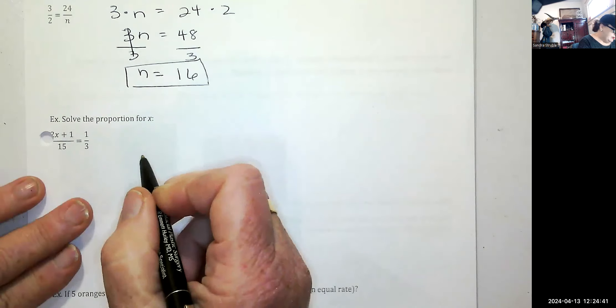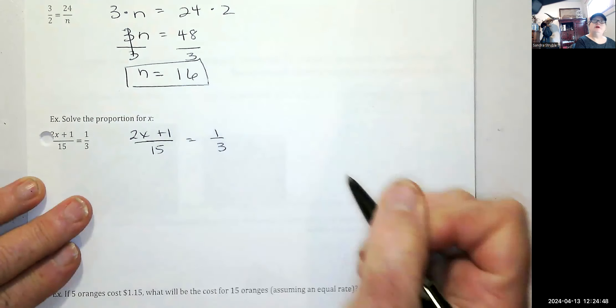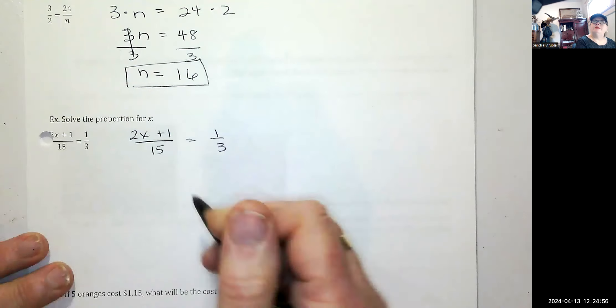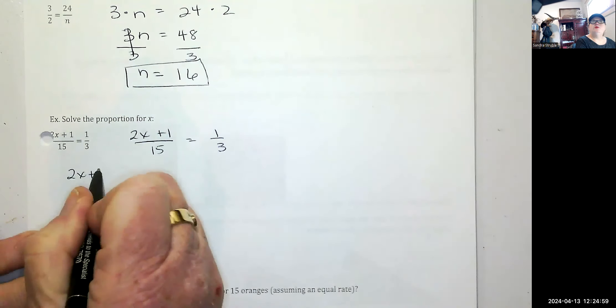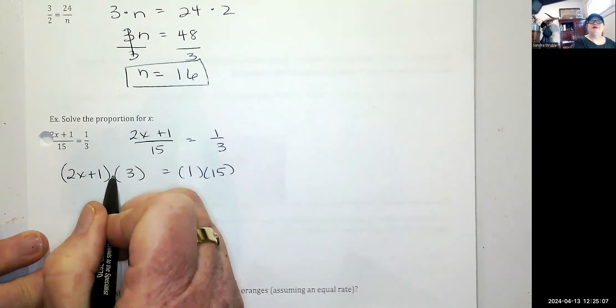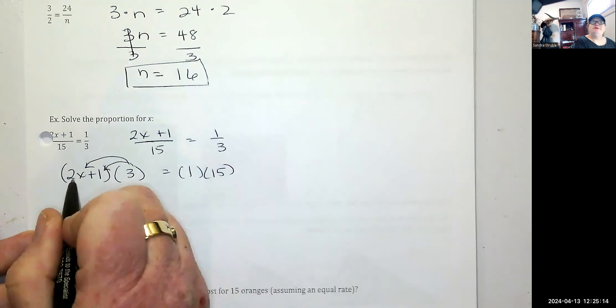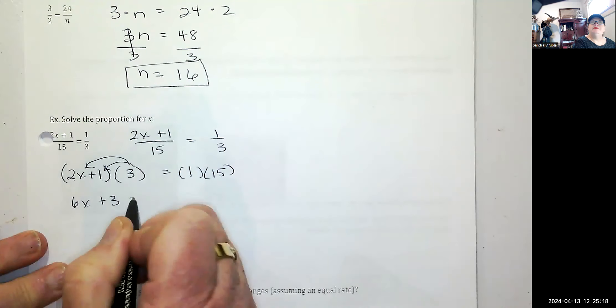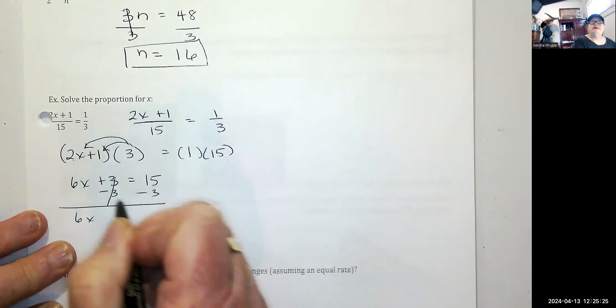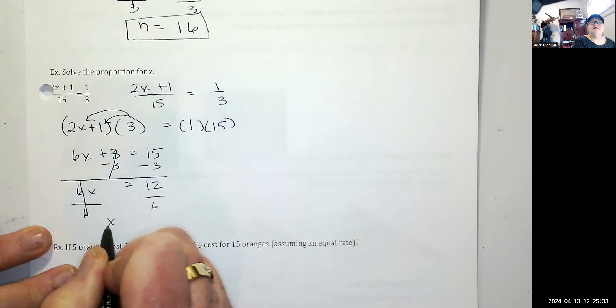Solve the proportion for X. I think that's 2X. I'm going to rewrite that. 2X plus one over 15 is equal to one third. You can do this one the same way. Pause the video, attempt this one yourself. 2X plus one times three is equal to one times 15. We need to distribute this over the binomial. Three times 2X is 6X. Three times one is three. One times 15 is 15. Solving for X, I'm going to subtract three from both sides. 6X is equal to 12. We have to divide both sides by six. And X is equal to two.